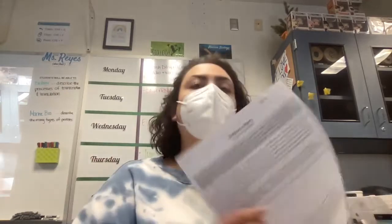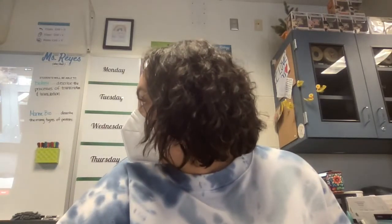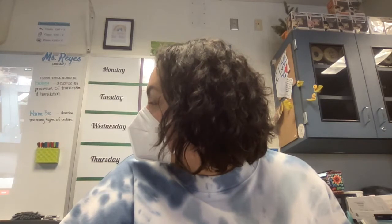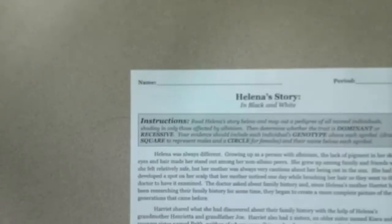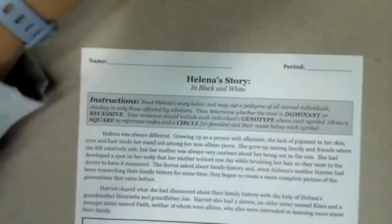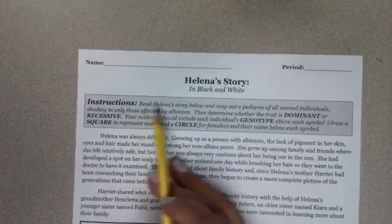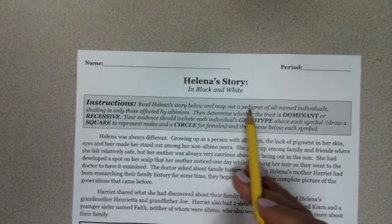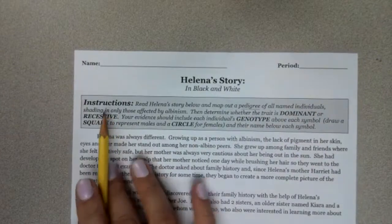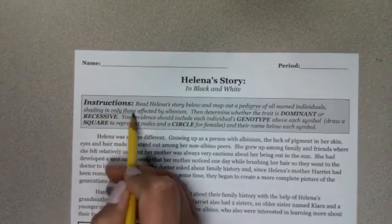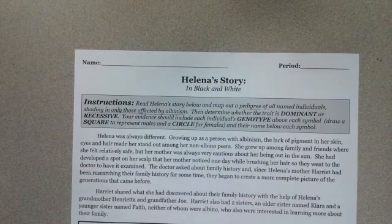Hello, wonderful and lovely students. Today I'm going to show you how to complete this Helena story in black and white — this is a pedigree story. So the first thing we need to do is read through the instructions. We need to read a story below and map out a pedigree of all named individuals, shading only those affected by albinism.